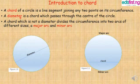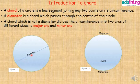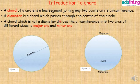A diameter is a chord which passes through the center of the circle. This is an example of a diameter. It is a line but it is called a diameter, not a chord, because it passes through the center of the circle. This is the center of the circle, so this line passes through the center. A chord which is not a diameter divides the circumference into two arcs of different sizes: a major arc and a minor arc.